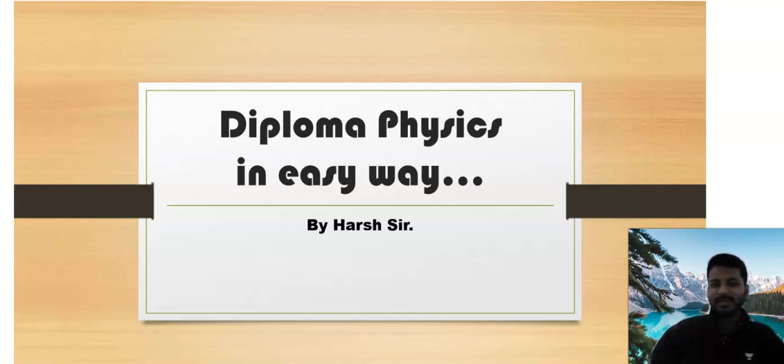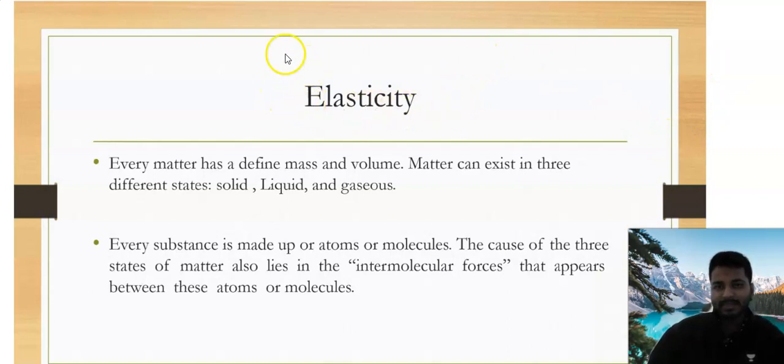Hello students, today we will discuss how to understand the new topic for diploma physics in an easy way. Let's try to understand step by step. First thing we will learn is physics elasticity. We need to understand elasticity in matter. You all know that every matter has a defined mass and volume. Let's try to understand this thing.